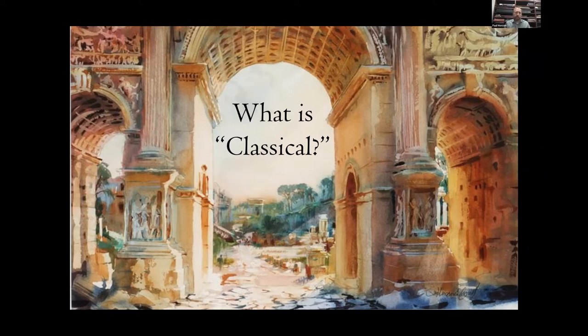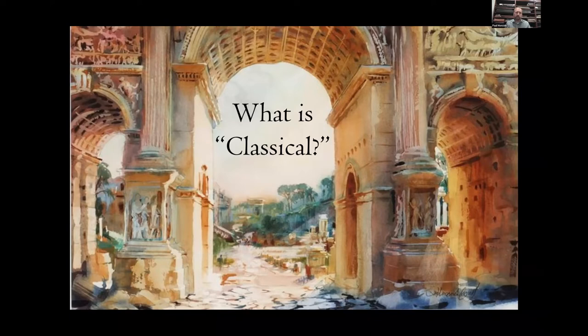There are few words in the English language as fraught with disagreement, complexity, and misunderstanding as the word classical. Your definition of classical can say more about you than about the word itself. What we see in this image — the Roman Forum through the Arch of Septimius Severus — is certainly classical architecture. The buildings are from what historians call the Classical Period in ancient history.